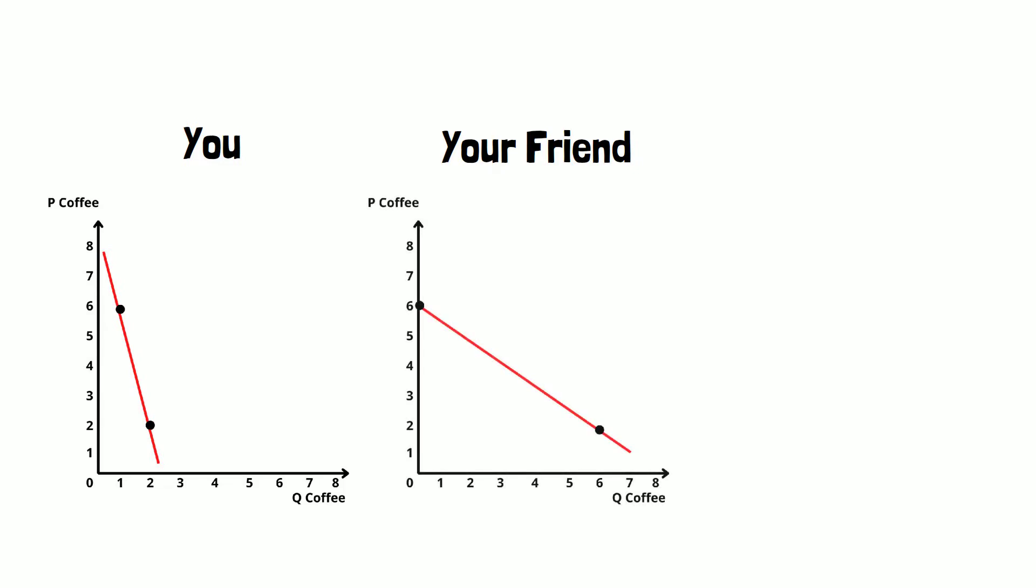We can do the same thing for your friend. On your screen, you can see your friend's demand for coffee. Again, on the y-axis you have the price of coffee and on the x-axis we have the quantity of coffee. You can see that when the price is $6, your friend consumes 0 coffees. When the price is $2,